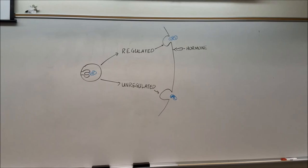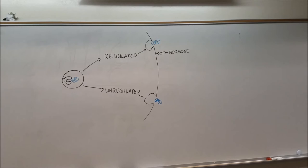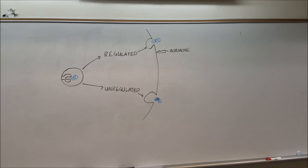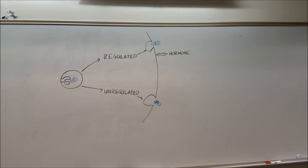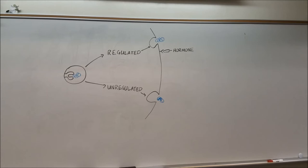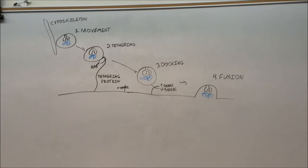Following vesicle formation, there are two ways that the vesicle can release its contents. It can either be regulated, in which case a hormone or some type of signal needs to interact with that organelle or cell membrane, and then the contents will be released. Or it can be unregulated, in which case the vesicle travels directly to the membrane and releases its contents, whether it be into an organelle or into the extracellular matrix.